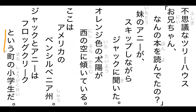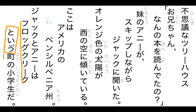Do you know what という means? The う on its own means to speak or utter. So という means 'to be called' or 'named.' So まち という フロッグ クリーク means 'the town called Frog Creek,' or the town you would refer to as Frog Creek.